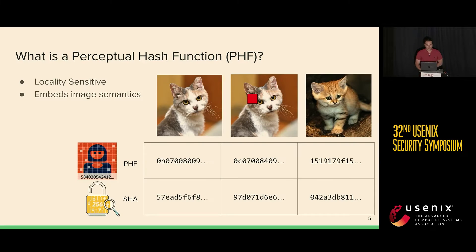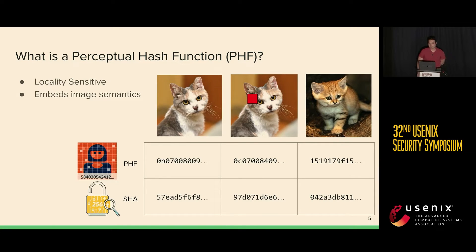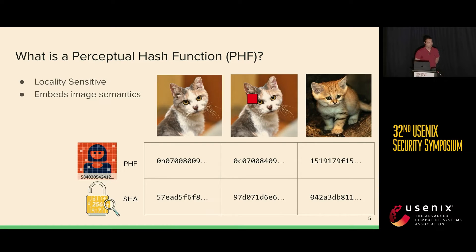So on to the paper. If you've read the title, you might be asking yourself what exactly perceptual hashing is. To start, a hash function is pretty much any algorithm that takes some arbitrary input — in this case we're using cat images — and produces some fixed size output, which I show the first 10 bytes of in the table below. The perceptual piece of a perceptual hash function is designed to embed image semantics within the resultant digest, and this allows the hash to be locality sensitive.